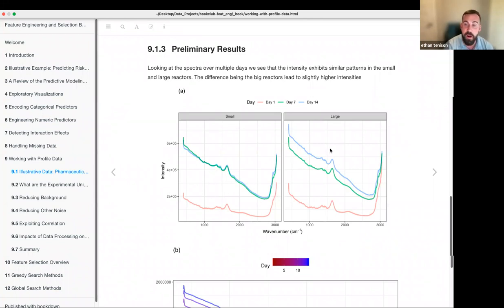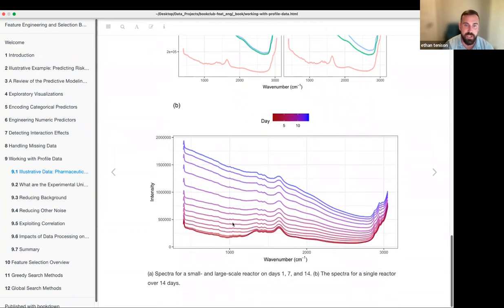And looking at the wave number on the x-axis, the intensity, the energy on the y-axis. And each line is a different day. Oh, sorry. So we have a small reactor here and then a large reactor on the right. Making comparisons between the two of them, we see that the intensity is much lower on day one, which kind of makes sense. Subsequently, they get much higher. And there are some similarities between the small and large reactors.